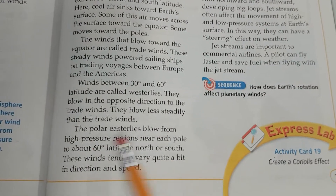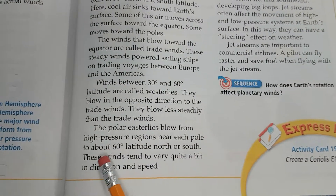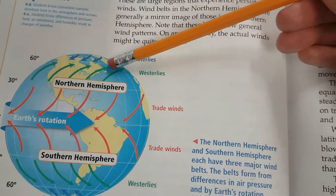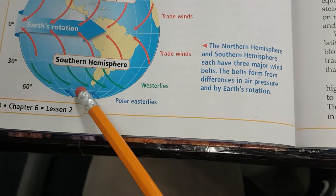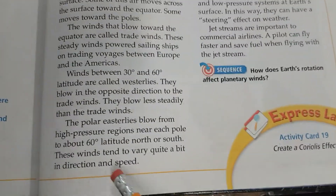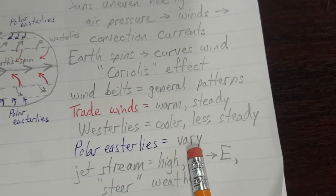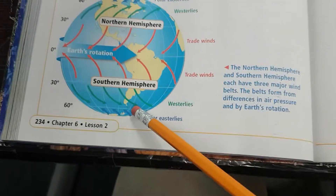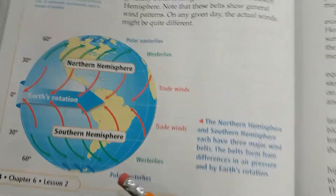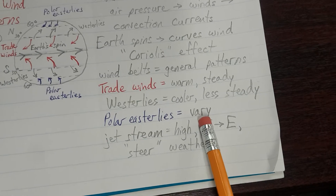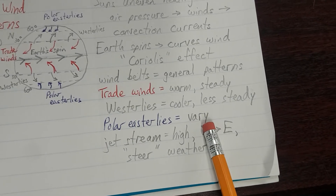The polar easterlies blow from high-pressure regions near each pole to about 60 degrees latitude north or south. These winds tend to vary quite a bit in direction and speed. Polar easterlies — in blue — vary, meaning they change quite often.